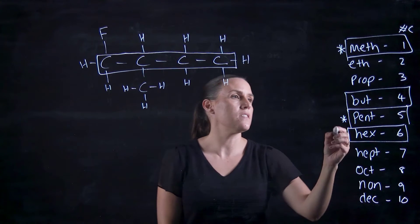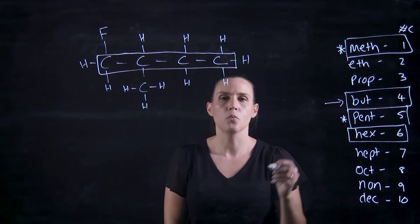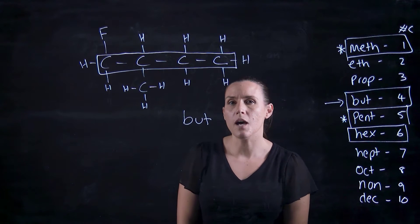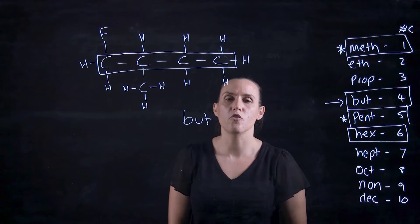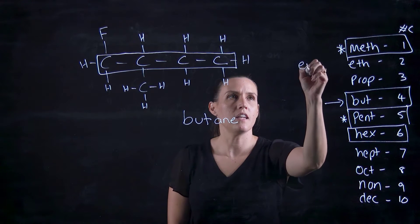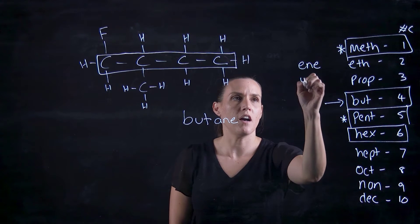So four carbons gives me bute. Looking at the bonds between the carbons, we've got single bonds. So remember single bonds are alkanes, double bonds are alkenes, triple bonds are alkynes.